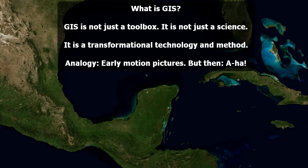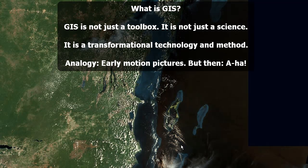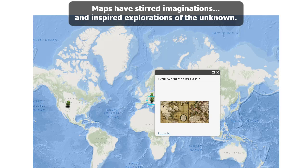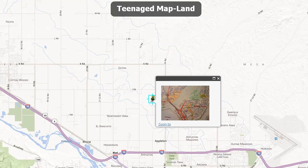Yes, we can look at where places are — capitals, coastlines, etc. But GIS is much more than learning where things are. GIS has to do with the interaction of things like coastal erosion and longshore sediment transport, and where people live and how vulnerable they are to storm surges, for example. Maps have stirred imaginations and inspired explorations of the unknown — this has been true for centuries. Maps have always been powerful sources of information, and it's no different nowadays with the advent of GIS.